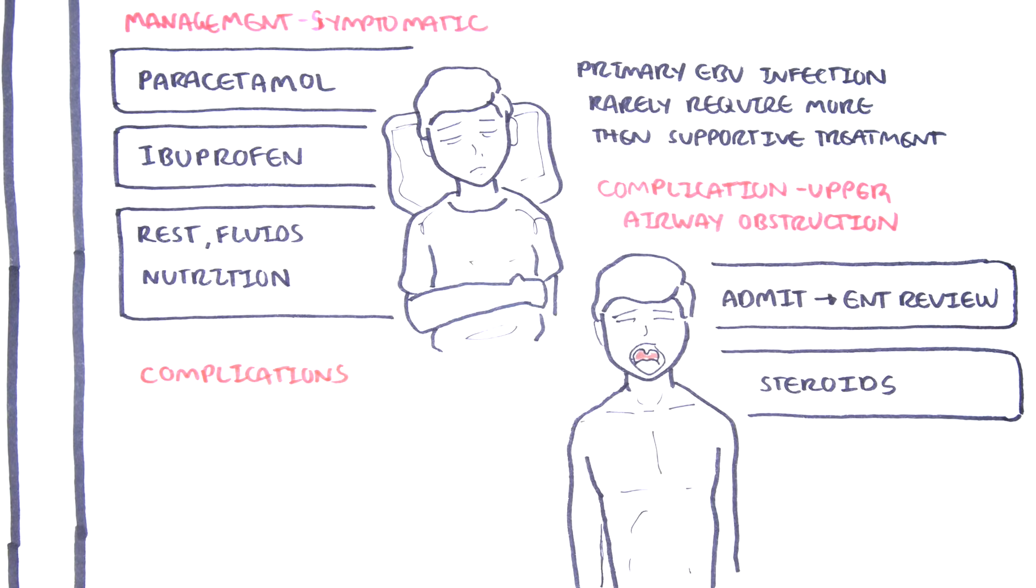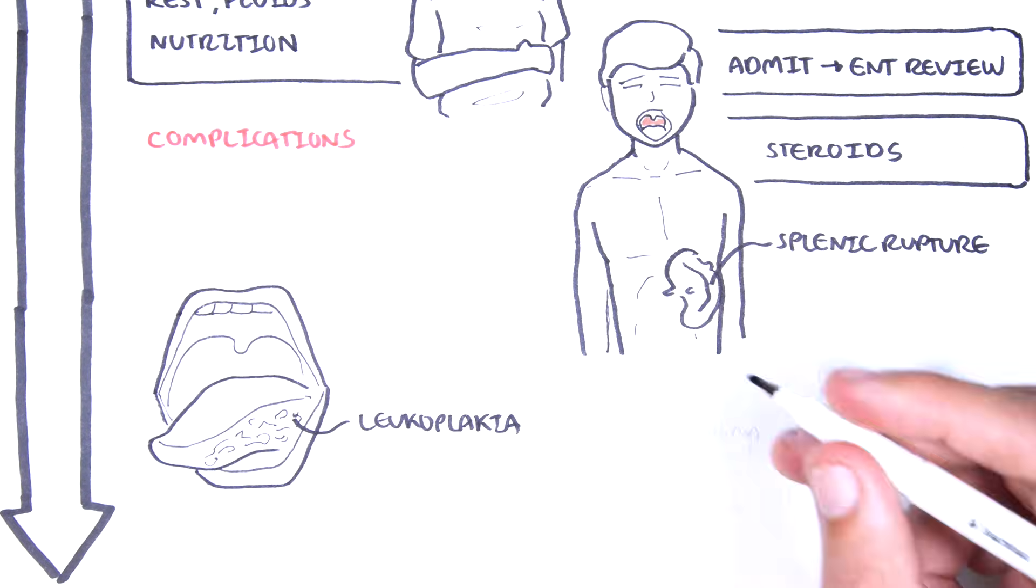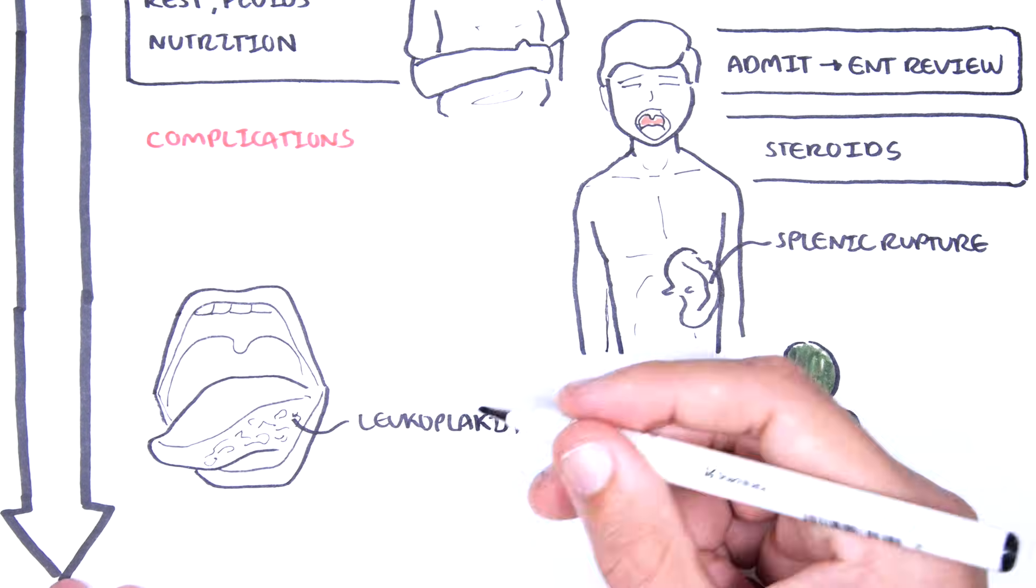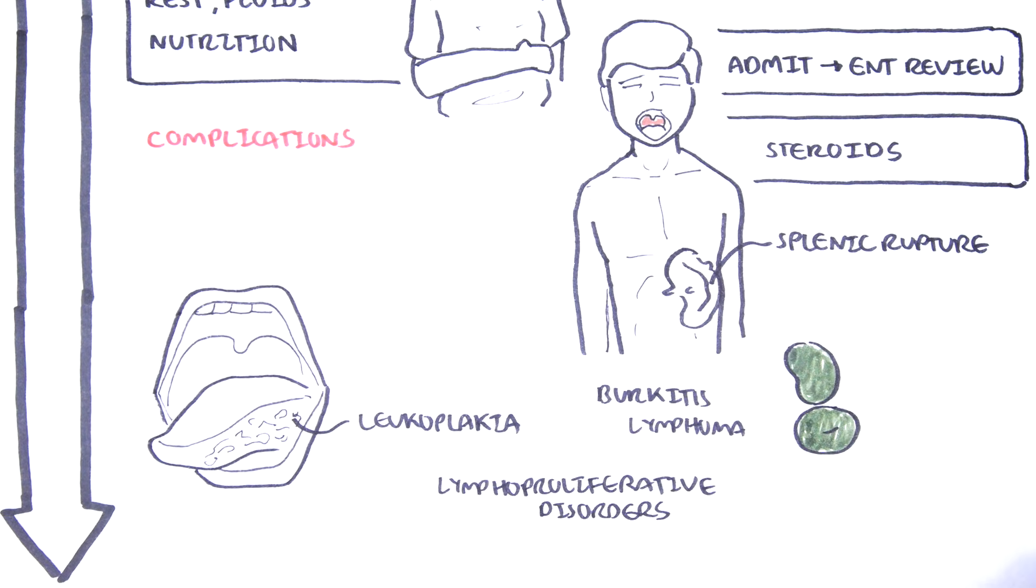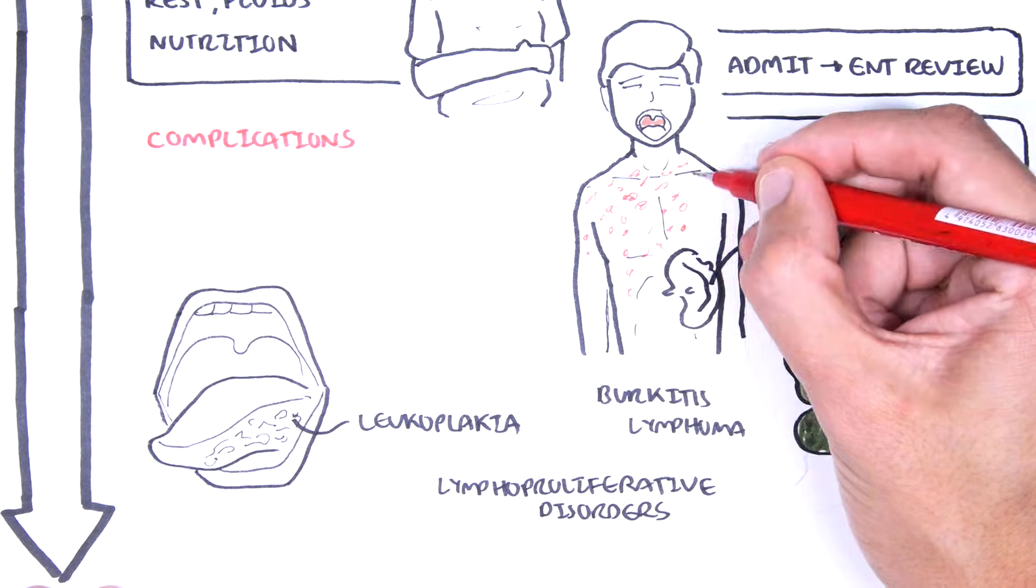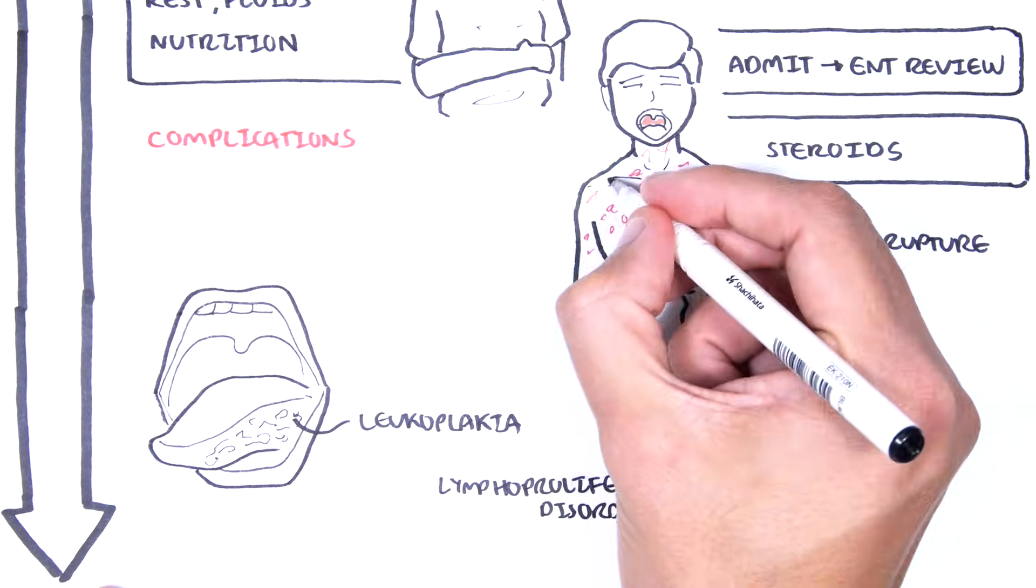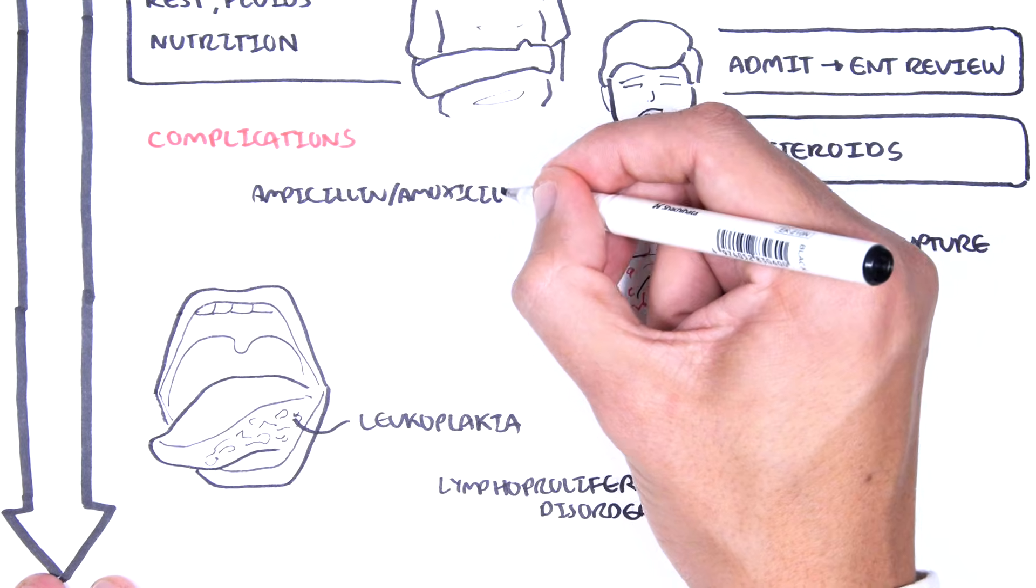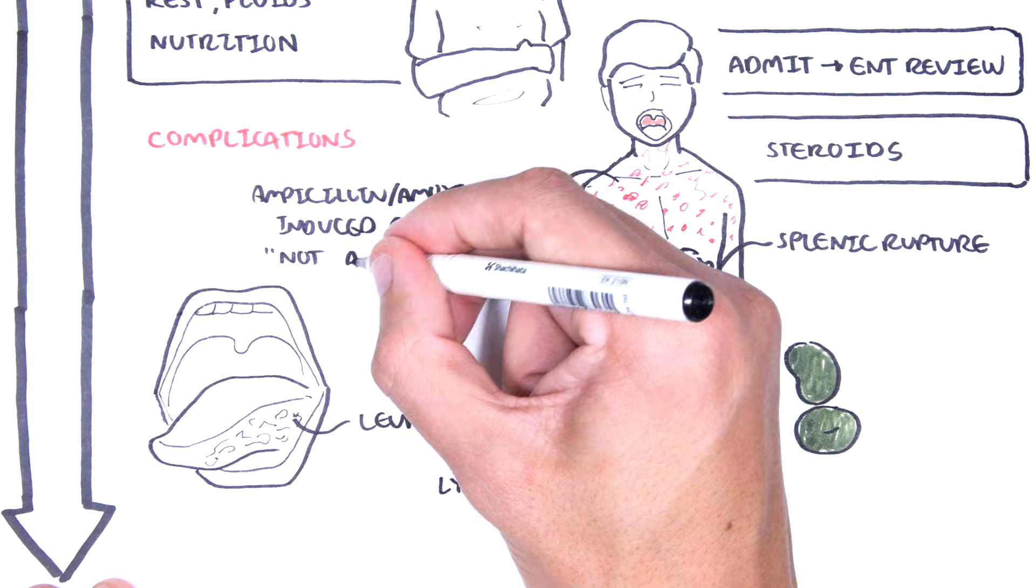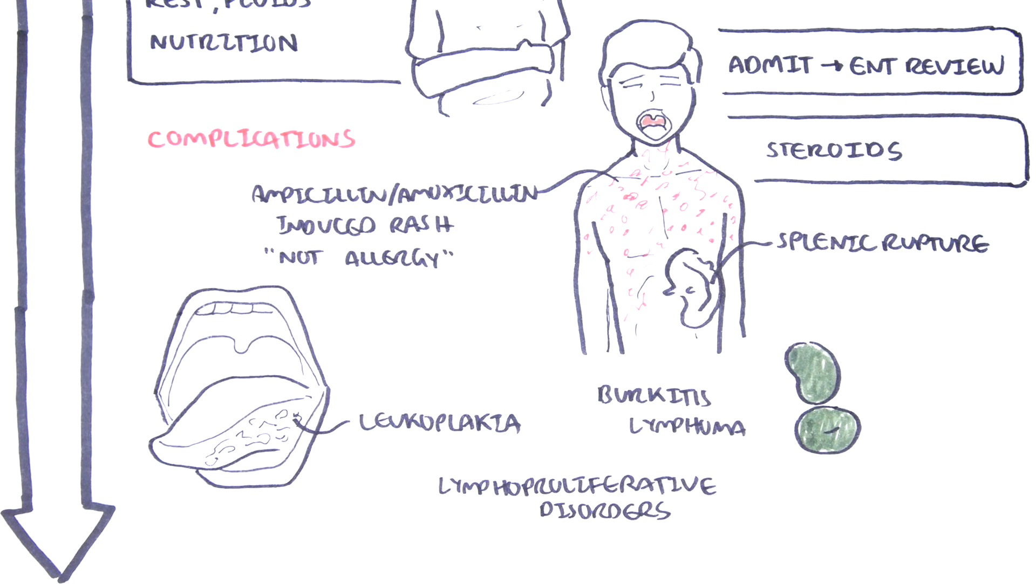Complications of Epstein-Barr virus infection include splenic rupture, leukoplakia, Burkitt's lymphoma, and lymphoproliferative diseases as well. In some cases, Epstein-Barr virus tonsillitis is treated with antibiotics accidentally, usually ampicillin, which when given in someone who has Epstein-Barr virus tonsillitis will cause a fine macular rash in up to 90% of people. The mechanism is unknown.